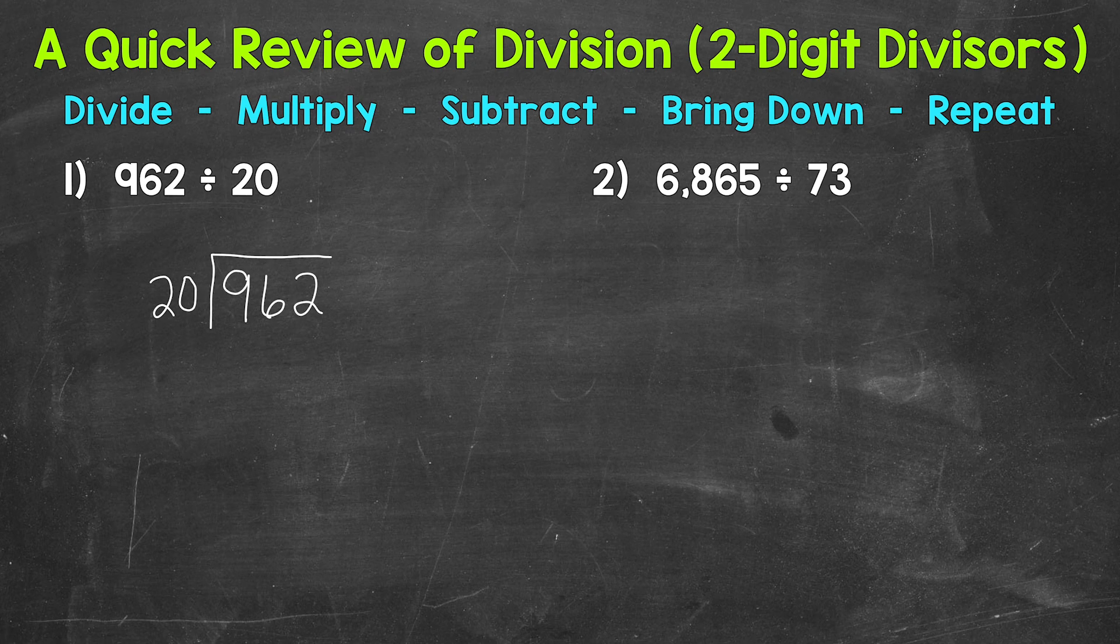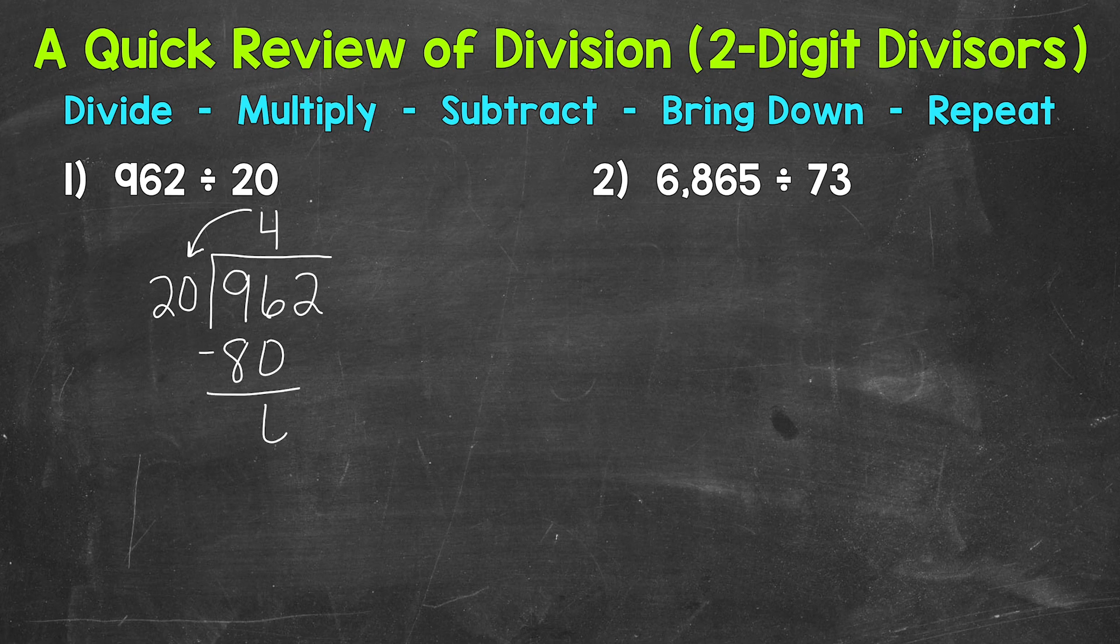Well, 4 groups of 20 gets us to 80, and then 5 groups of 20 gets us to 100. So 5 is too many. It's going to be 4. So we need to put a 4 above the 96. Don't put it above the 9. Put it above the 6 because we did 96 divided by 20. Then we come around and multiply. So 4 times 20, that gives us 80. Then we subtract. 6 minus 0, 6. And then 9 minus 8, 1.